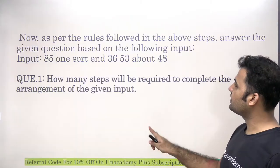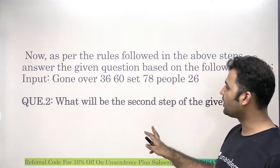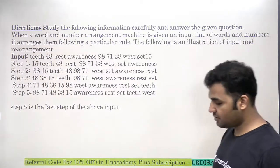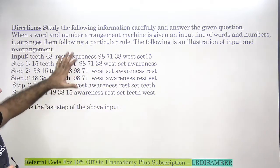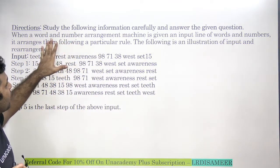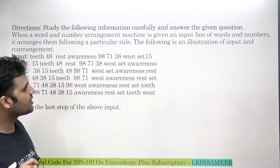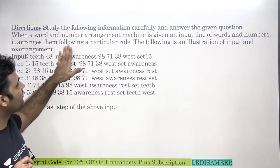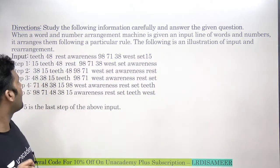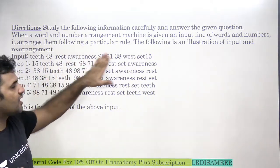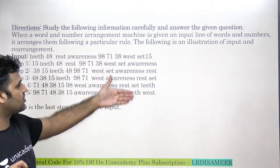Let's have a look at the set. This is the set I will be discussing. The question says that when a word and number arrangement machine is given an input line of words and numbers, it arranges them following a particular rule. The following is an illustration of input and output arrangement. These are the rules that we are supposed to observe step by step.